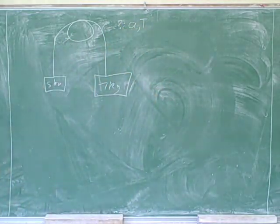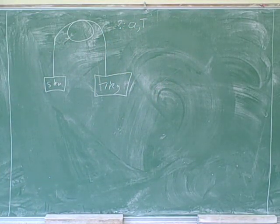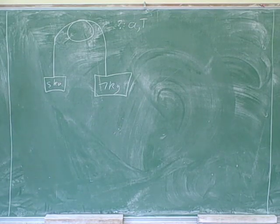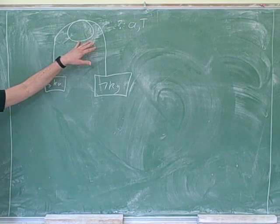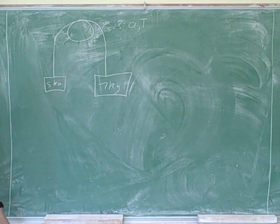Okay, here's a typical type of problem where we have two objects connected with a rope over a frictionless pulley. The question is to find the acceleration and the tension.